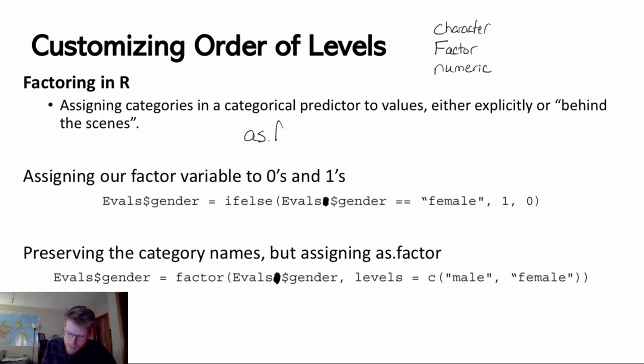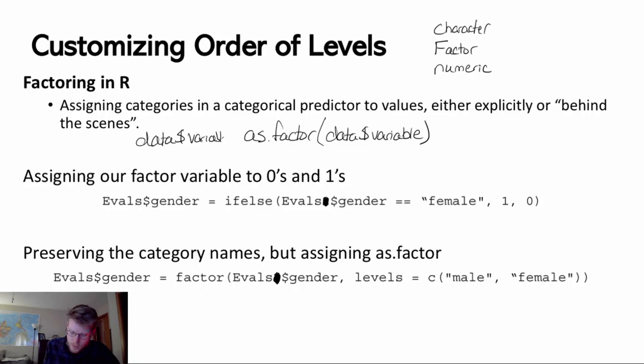One way to do that is with a command called as.factor. Inside you would name your variable — data$variable, assuming it's a variable within some dataset. You would rewrite that over the original variable: data$variable equals as.factor(data$variable). This simply turns that variable into a factor variable for modeling purposes, where we want to use different categories as levels assigned to 0 or 1.